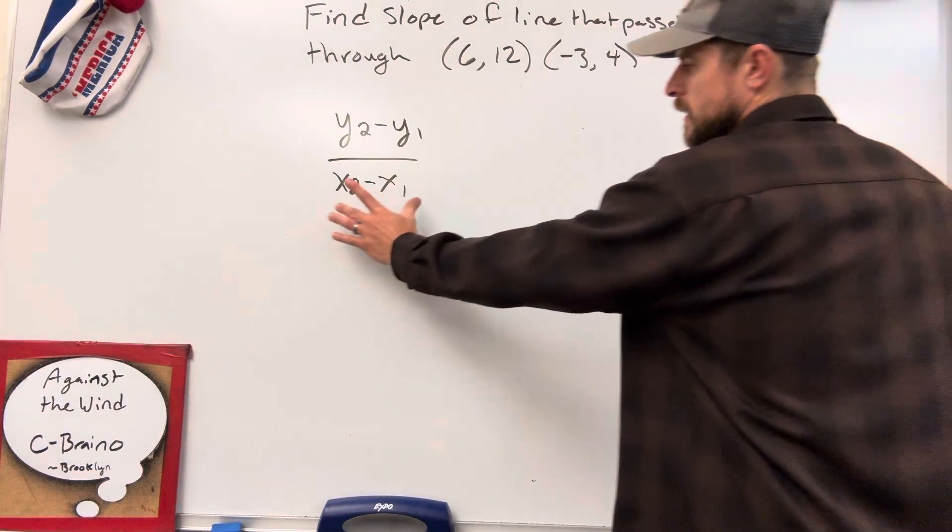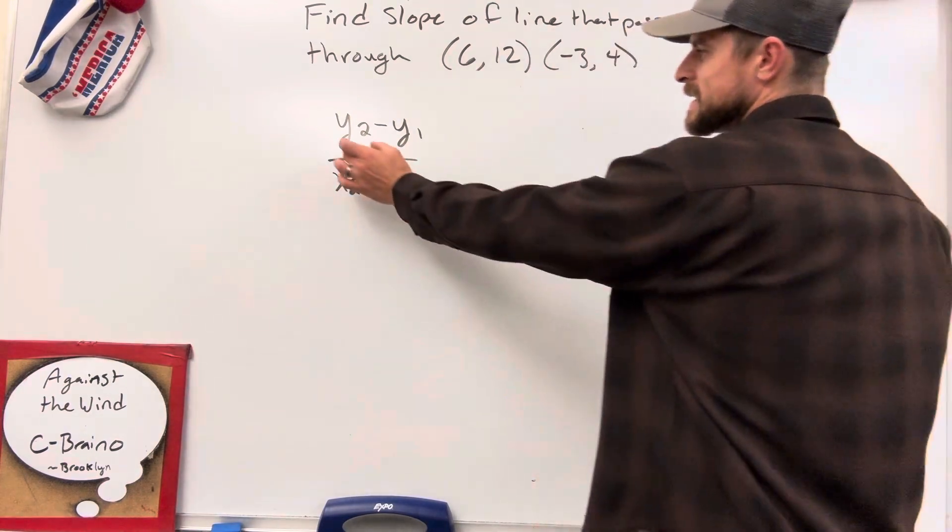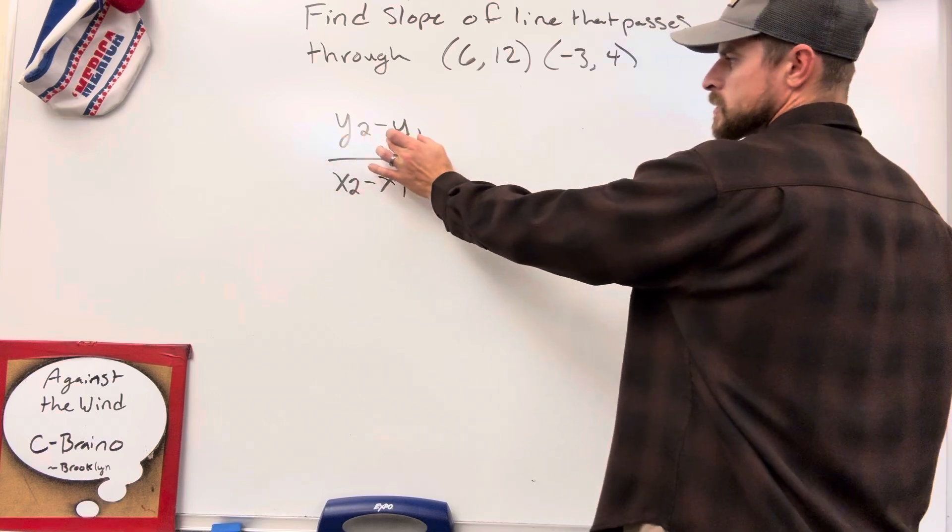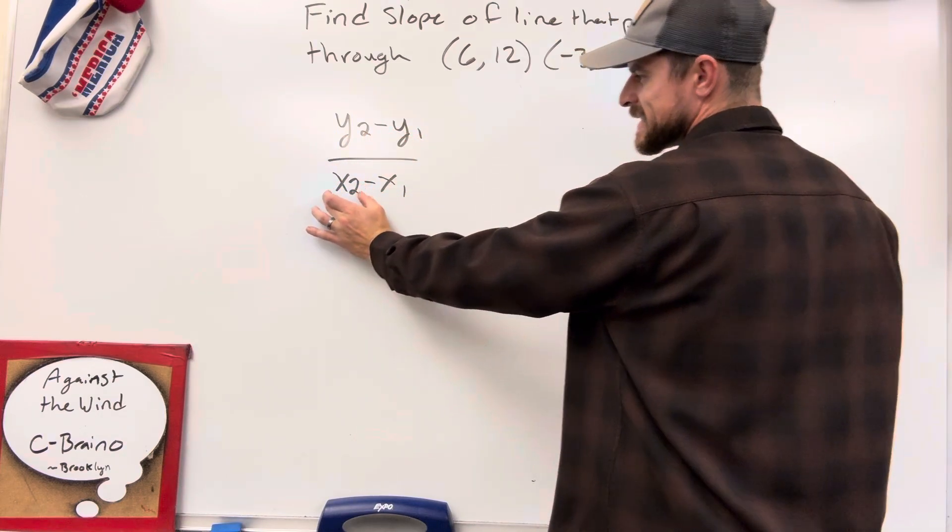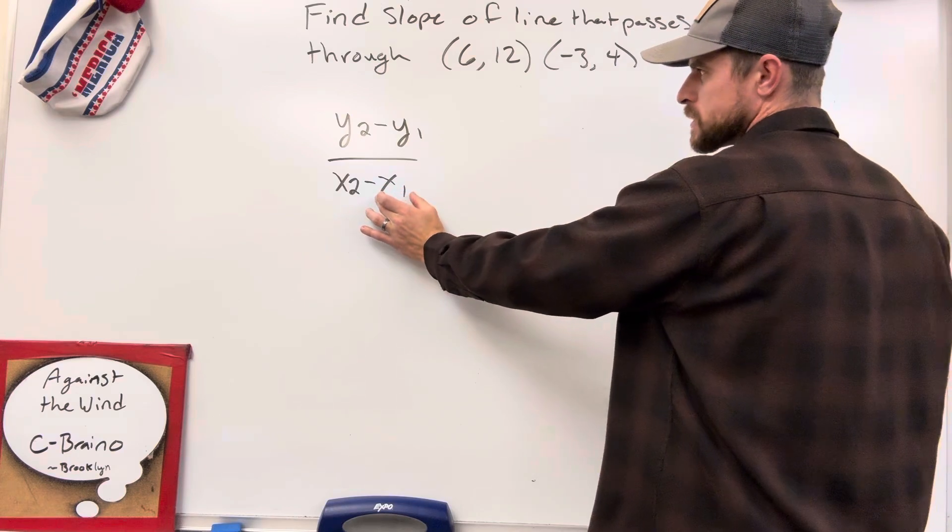Okay, so let's start with slope formula. We're basically taking our second y value, subtracting our first y value, and then on the bottom, we need to take the second x value, subtract the first x value.